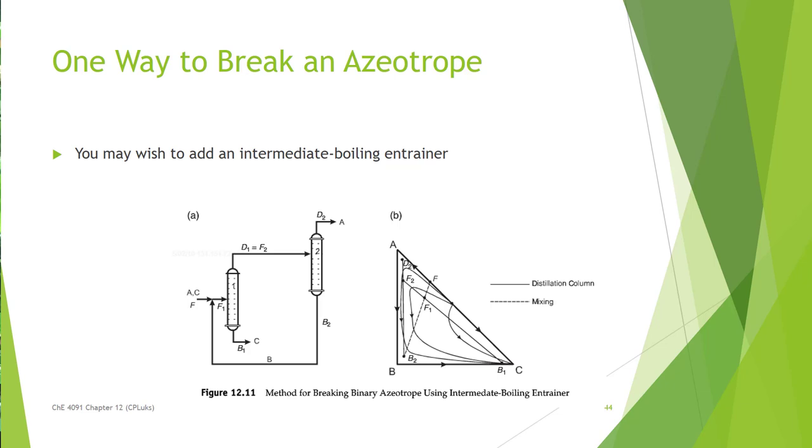So one thing is you can add a component that will actually break the azeotrope. It's an intermediate boiling entrainer. You want it to have a boiling point that's between the two things you're trying to separate. And if you choose well, you can actually get these then to go past your azeotrope and then separate out the entrainer in a secondary step.